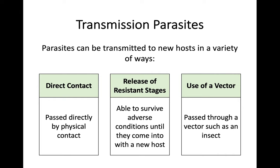Just remember that parasites gain from the relationship, exploit the host, and the host is harmed in the process. It's not actually beneficial for a parasite to kill the host or damage them too much, because the survival of the host is also important for the survival of the parasite. Now, the next thing we're going to look at is how parasites are transmitted. In a direct life cycle, there are three different ways: physical direct contact, the release of resistant stages, or the use of a vector.